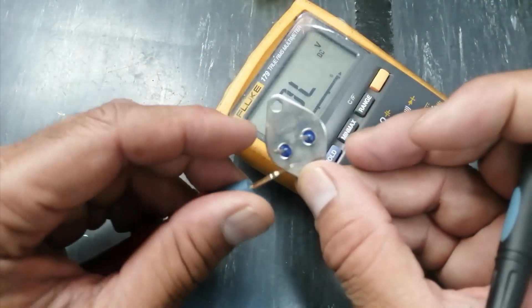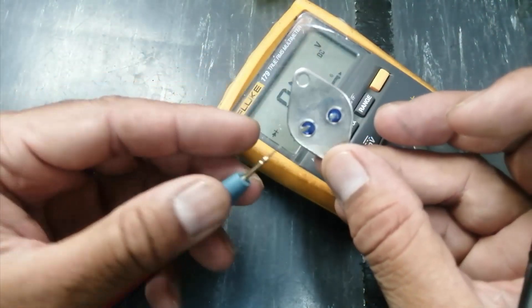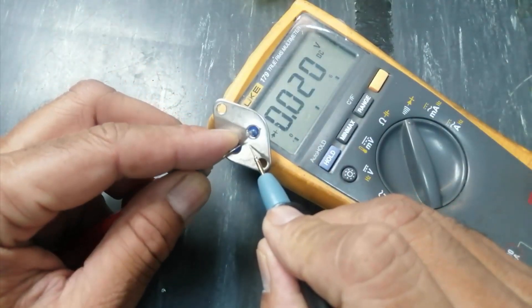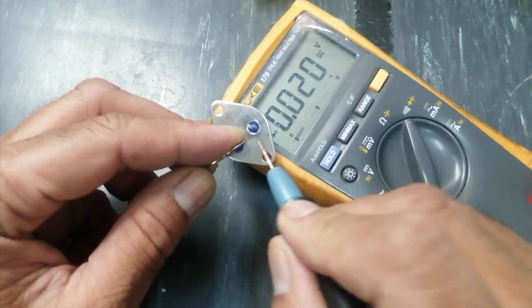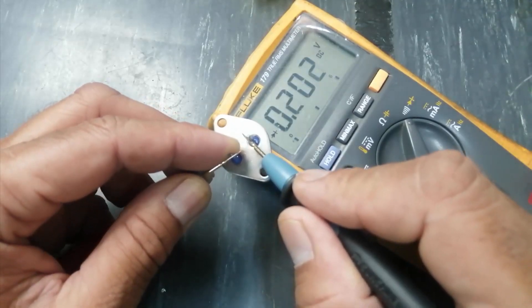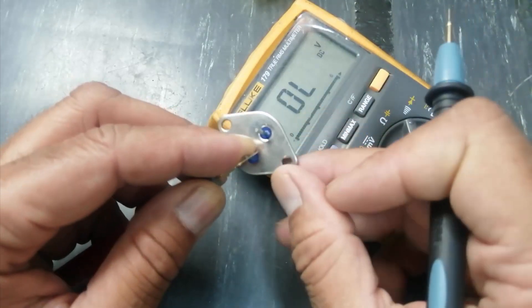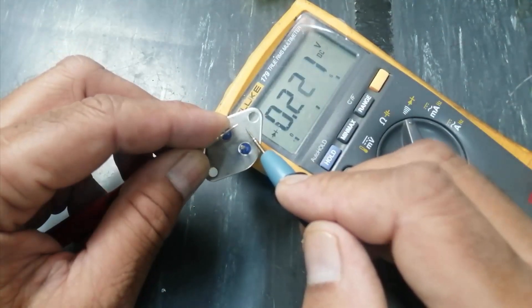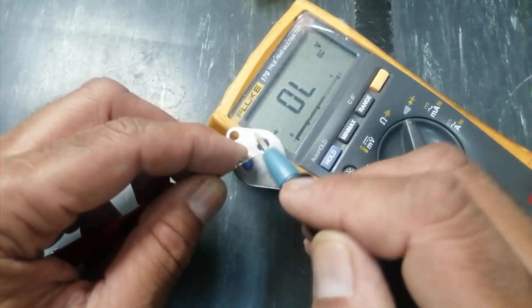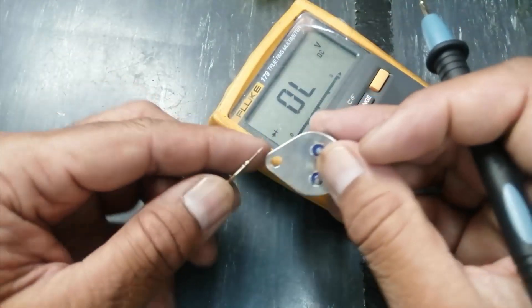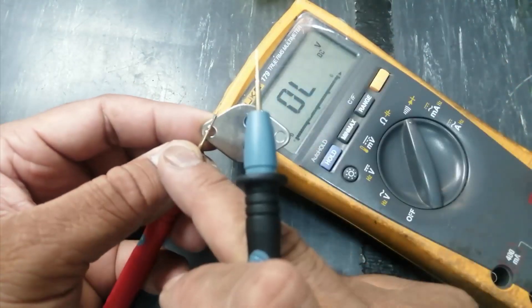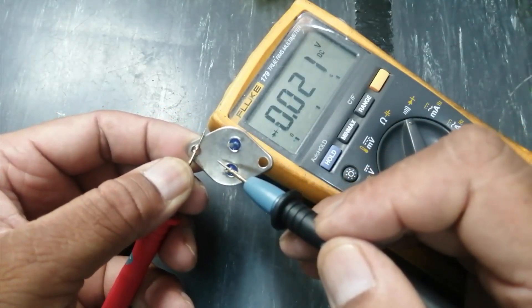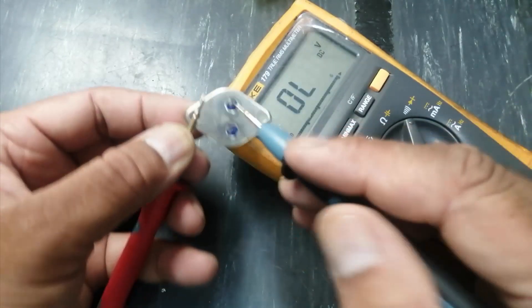Now, when you want to test the transistor, make one lead as common and connect it to one pin. It is short. Now connect with the other pin. It is 0.203. Now move this lead to the other terminal and check. So all junctions are damaged.